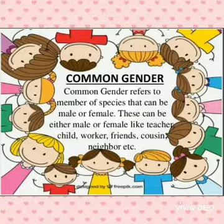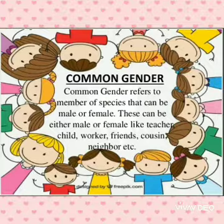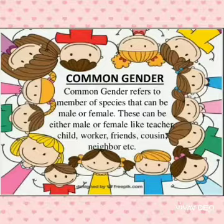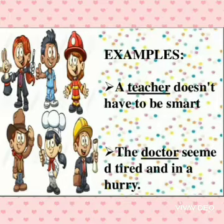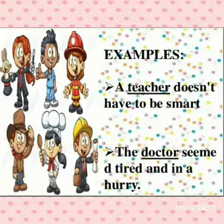Now the third category, that is the common gender. Common gender refers to the member of a species that can be male or female. These can be either male or female, like teacher, child, worker, friends, cousin, neighbor, etc.